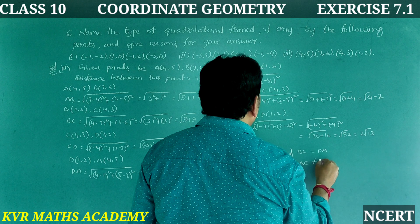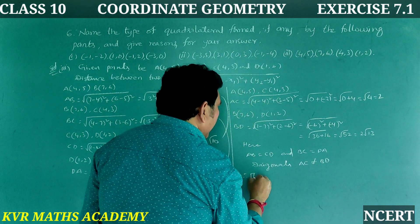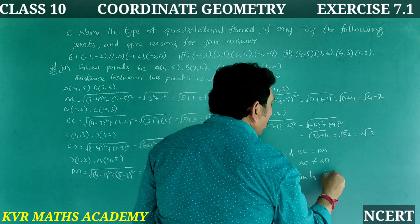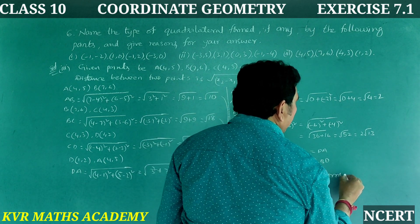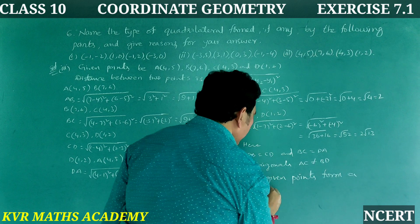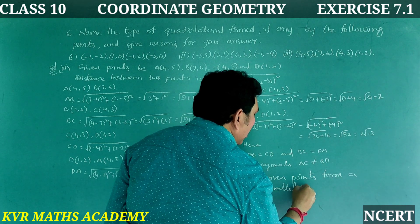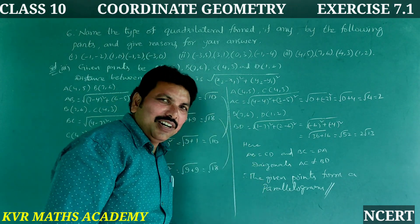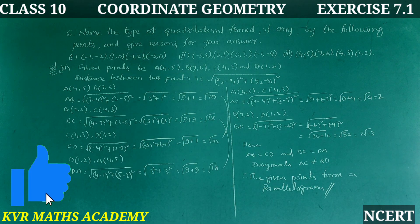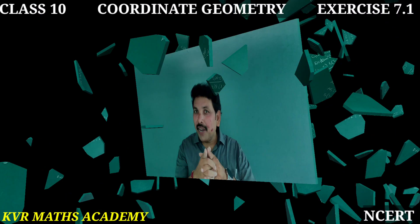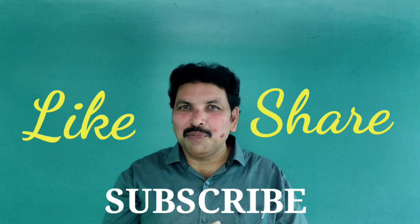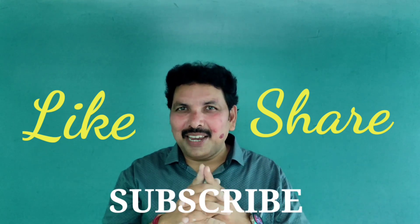Since AB equals CD and BC equals DA, and AC is not equal to BD, therefore the given points form a parallelogram. Have you understood clearly? Okay viewers, like, share, and subscribe. See you in the next video. Thank you very much.